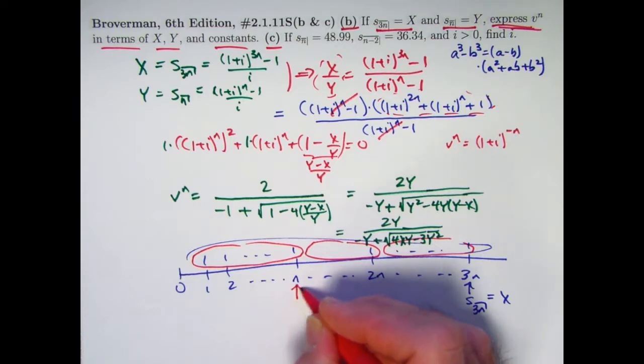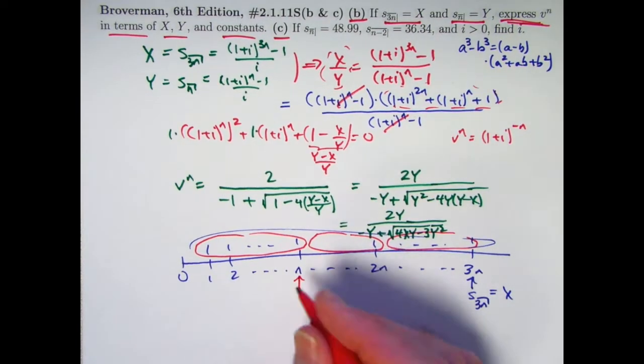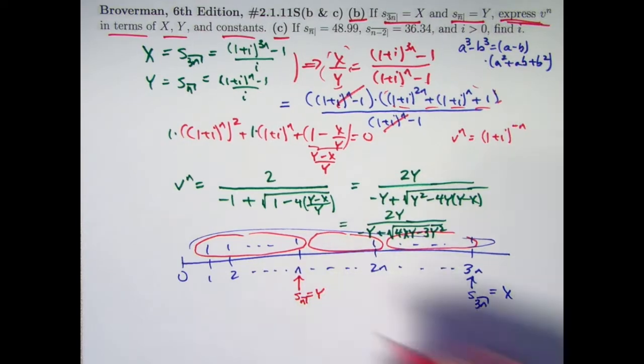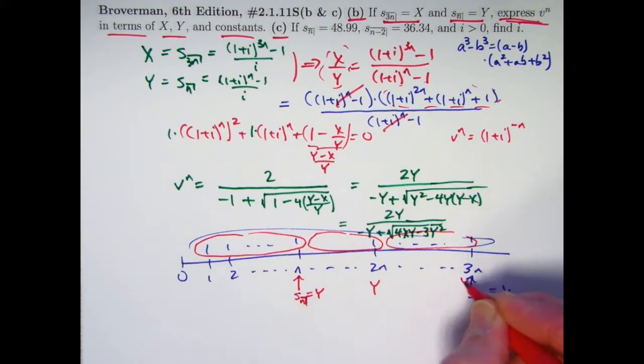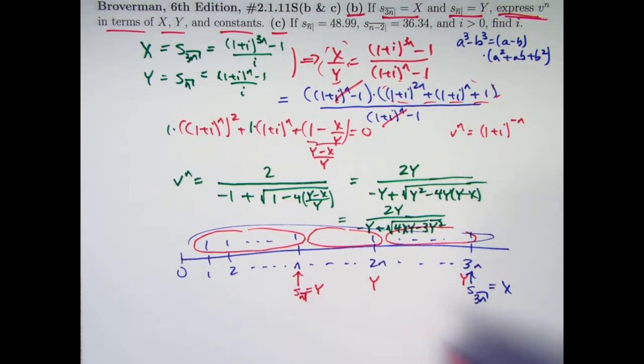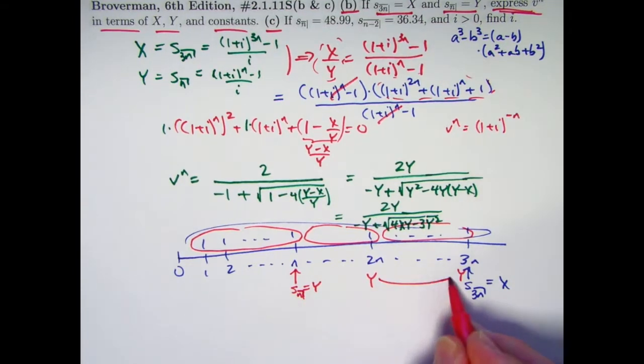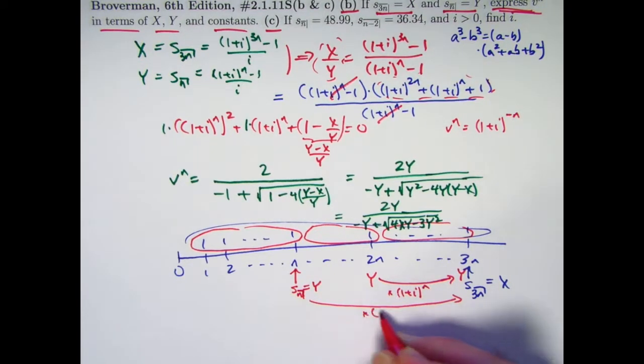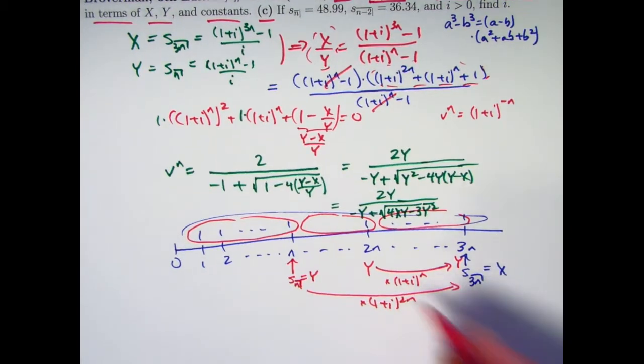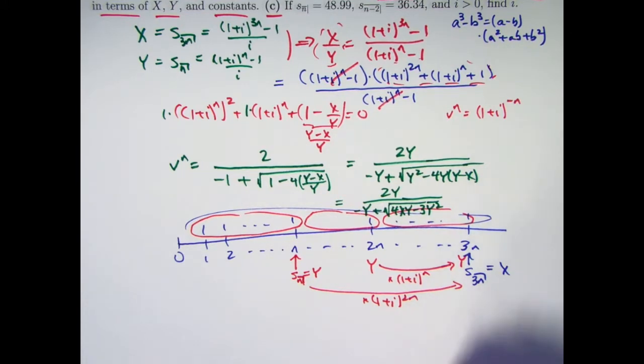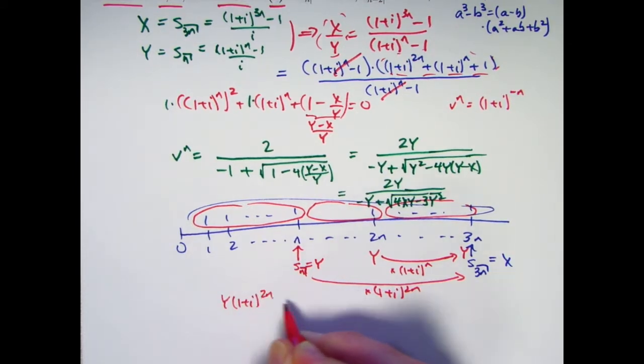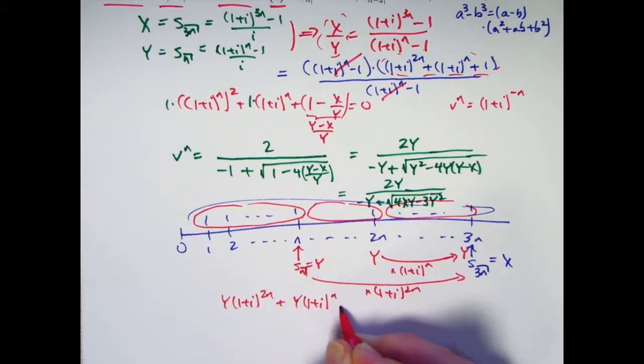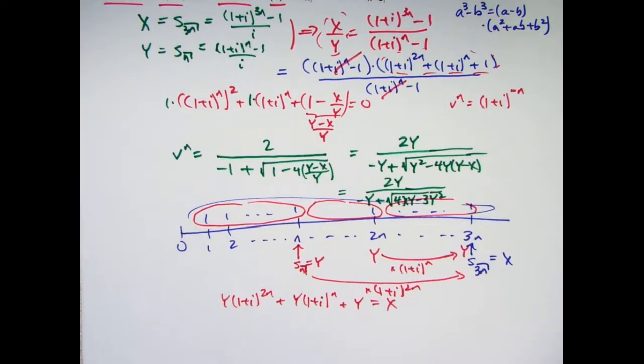Another way to find that future value is to break apart the 3n payments into three groups of n. We can find the future values of each of those income streams immediately after the last payment. And it equals Sn, which we're calling y. So we get a y there. That's Sn equals y. We get a y here. And we get a y here. As long as we push these two payments forward in time to time 3n by multiplying by an appropriate power of 1 plus i, 1 plus i to the n for that one and times 1 plus i to the 2n for this one. Then the sum of those three values of y with promotions in time to time 3n must equal x.